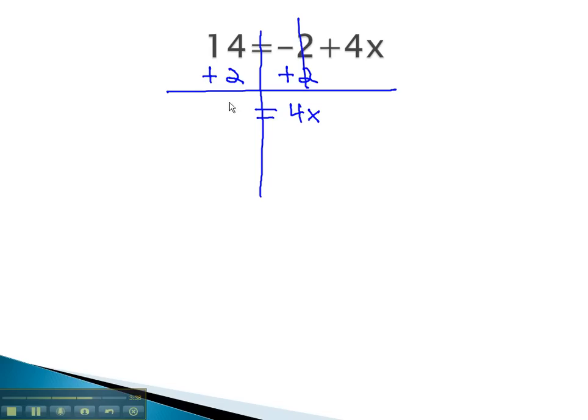On the left side, 14 plus 2 is 16. Now, to get the x alone, right now we have 4 times x. The opposite of multiplying is dividing. To get rid of the 4 and leave x alone, we divide out the 4 on both sides.